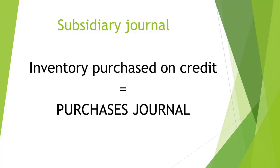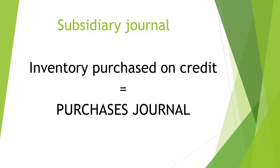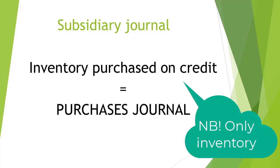When a business purchases inventory on credit, those transactions are recorded in the Purchases Journal. It is the only transactions recorded in the Purchases Journal. If a business, for example, purchases a vehicle on credit, it is not recorded in the Purchases Journal. It is only for inventory purchased on credit.